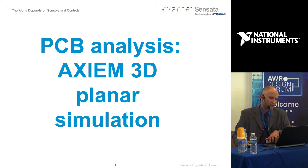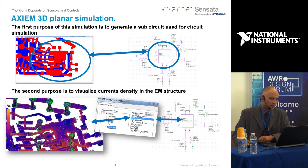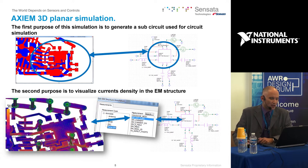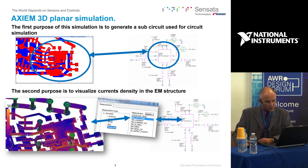Let's talk about the Axiem 3D simulation. The main purpose of the Axiem simulation for us is to generate a sub-circuit we can use on the circuit side that takes into account all the parasitic elements present in the PCB — track coupling with ground, track length, and every EM coupling between elements in the EM structure. So when we simulate the circuit with the sub-block, we can be very close to reality.